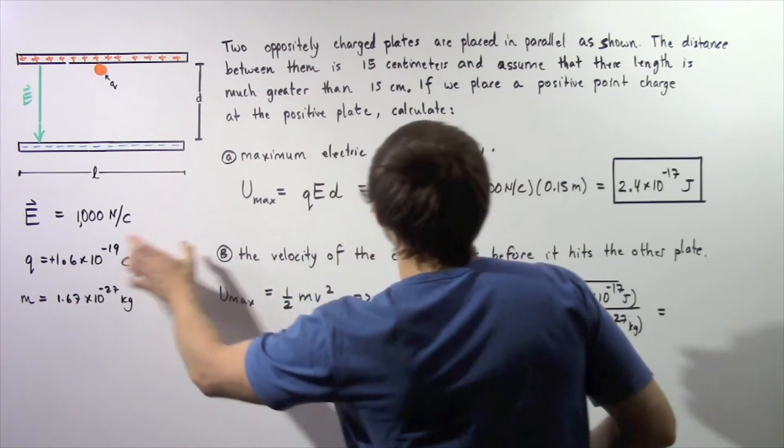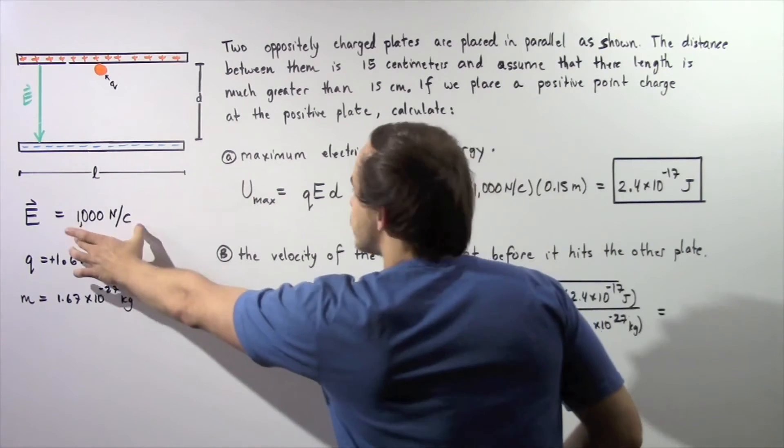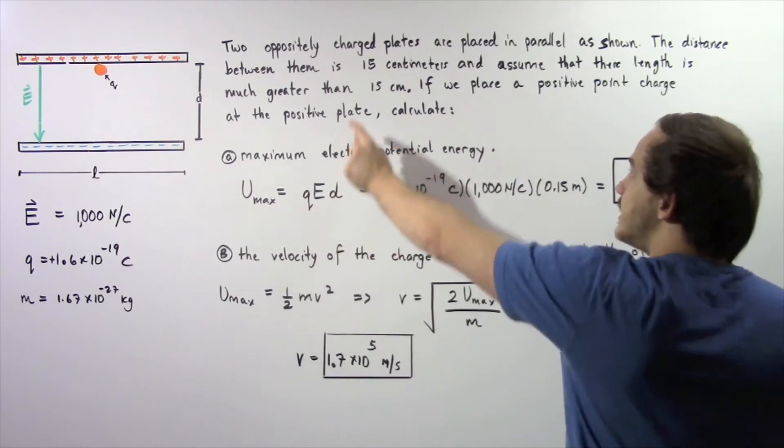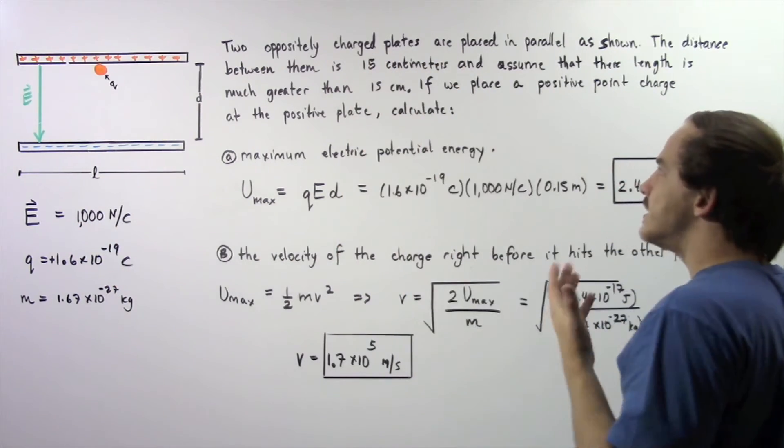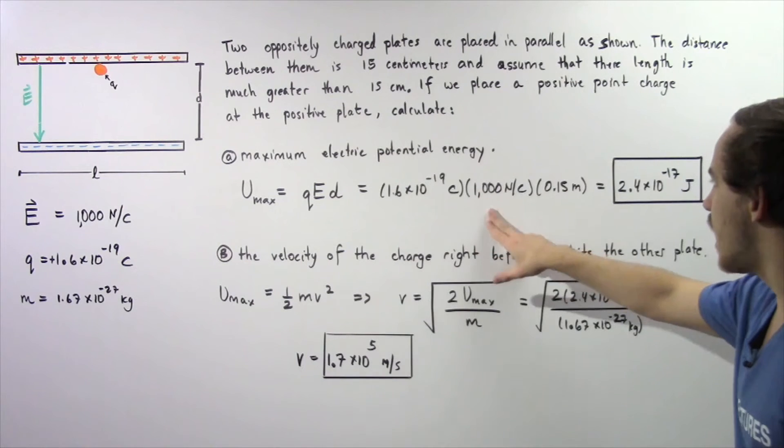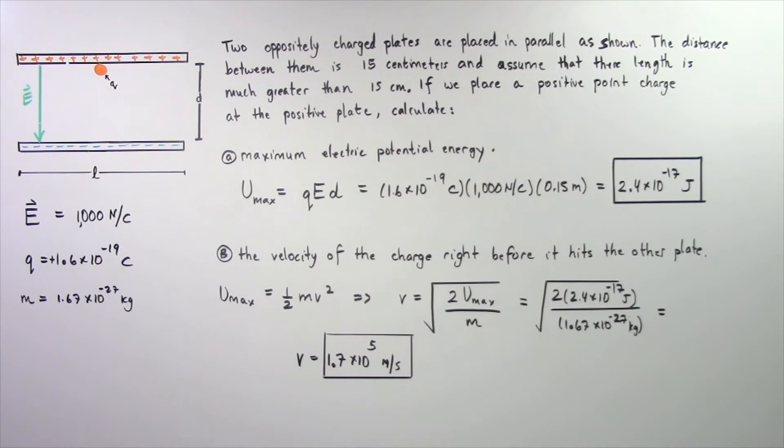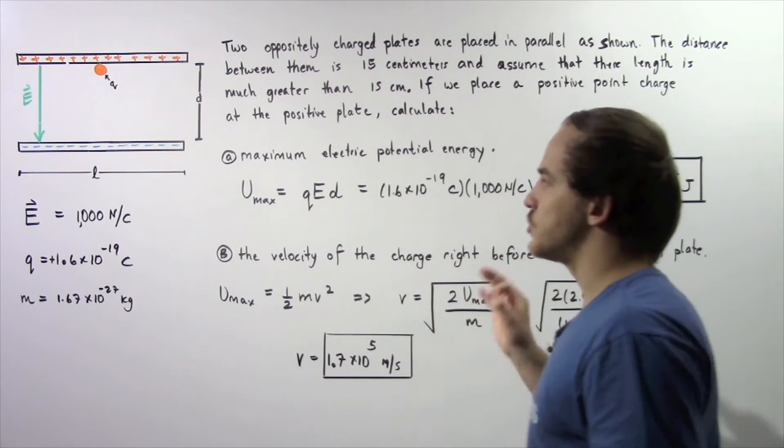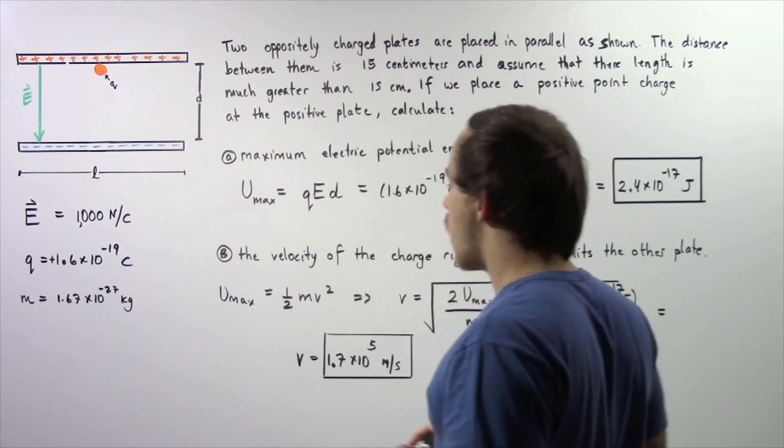Our Q is this quantity, our E is this quantity, and our D is 15 centimeters divided by 100, which gives us 0.15 meters. We multiply and we get 2.4 times 10 to the negative 17 joules as the maximum electric potential energy of our point charge.